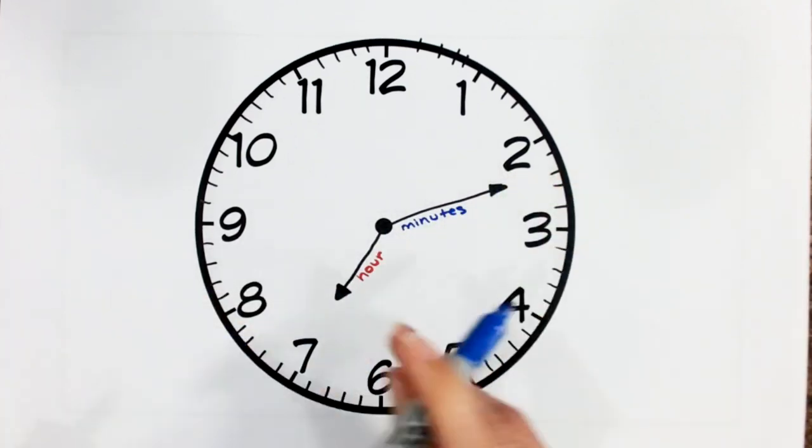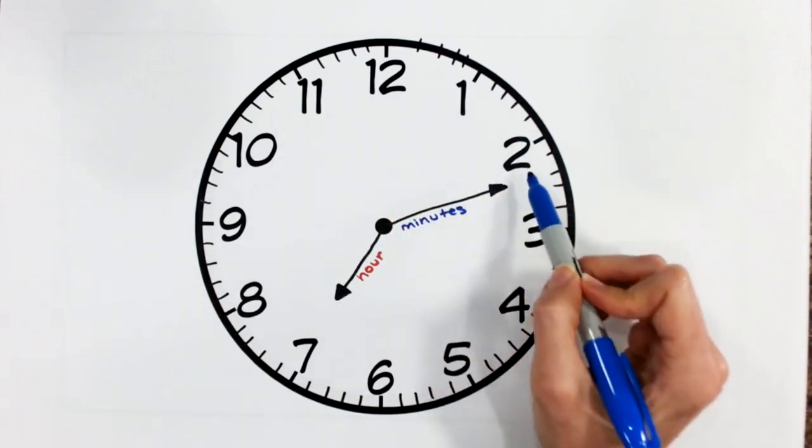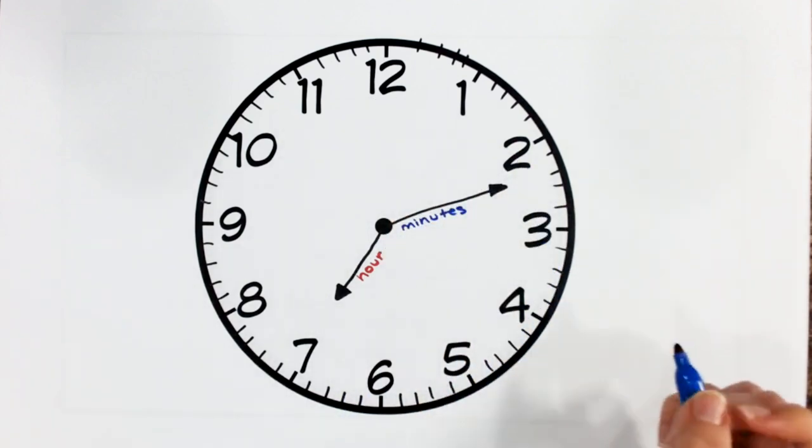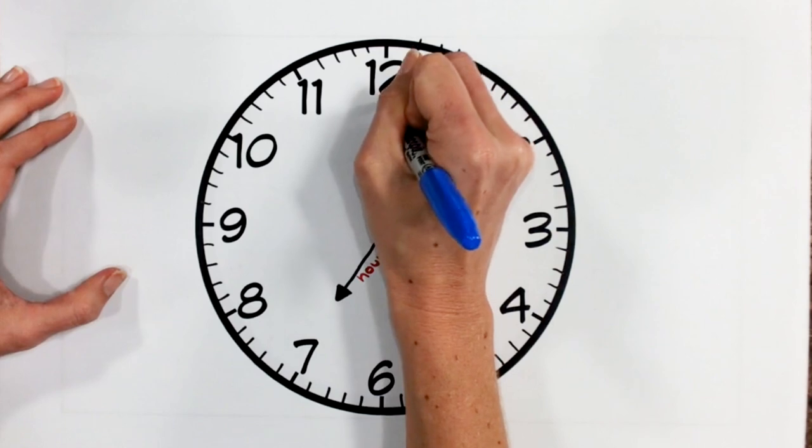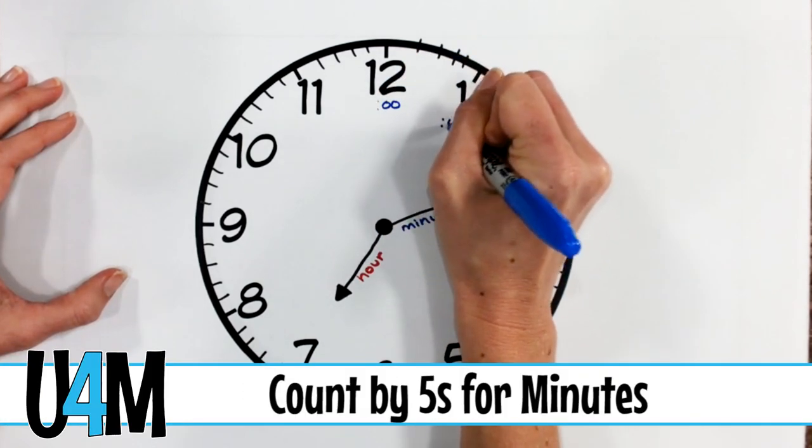Now, I do notice that I don't have my five-minute increments labeled, so I always want to go ahead and start with that. So we count by our fives again.